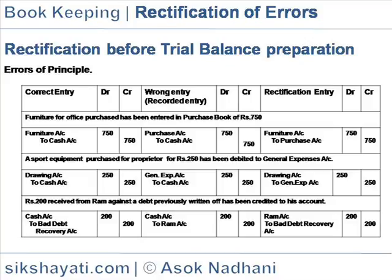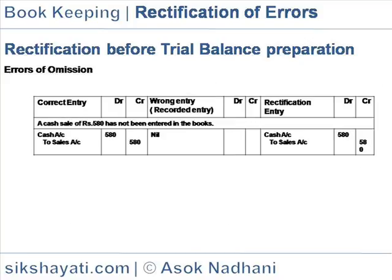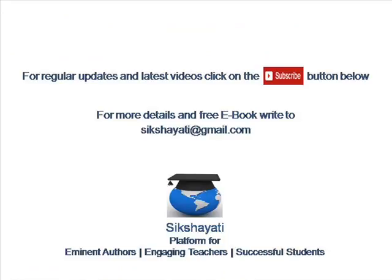Rs.200 received from RAM against a debt previously written off has been credited to his account. The rectification entry would be as follows. Rs.200 received from RAM against a cash sale of Rs.580 has not been entered in the books. The rectification entry would be as follows.